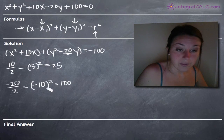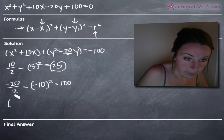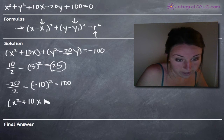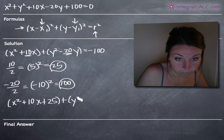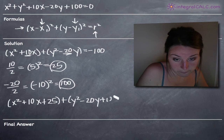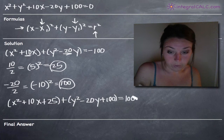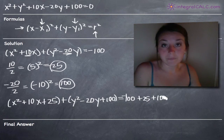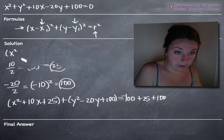Now that we've found both of these values, we complete the square by adding them to the x and y groups. So we add 25 to the x terms — x squared plus 10x plus 25 — and add 100 to the y terms — y squared minus 20y plus 100. To balance the equation, we also add 25 and 100 to the right-hand side, giving us negative 100 plus 25 plus 100.